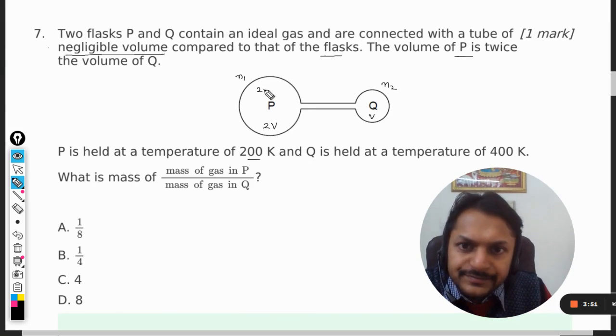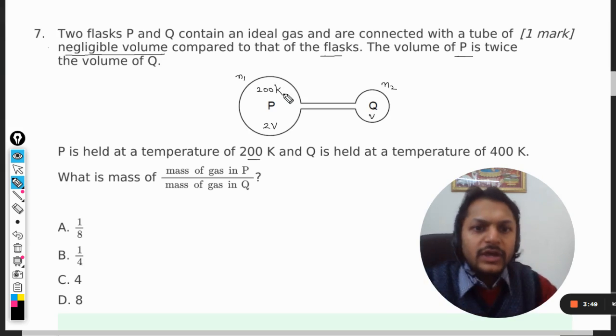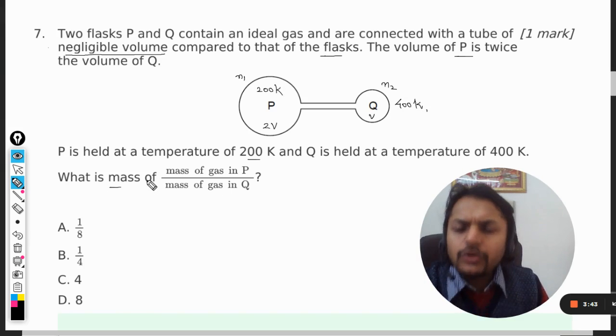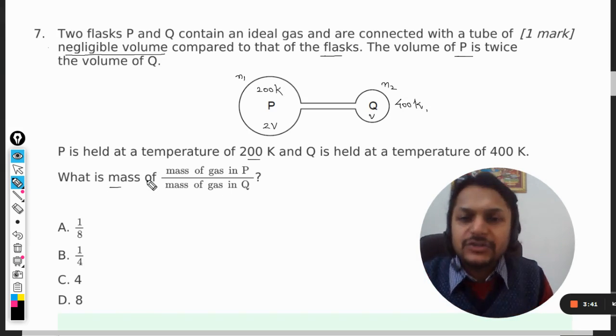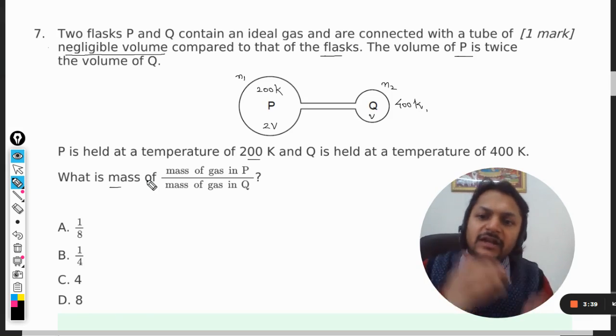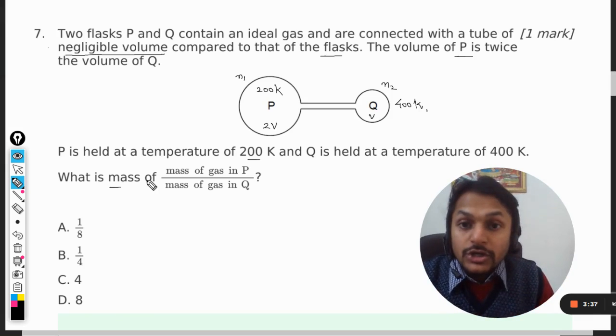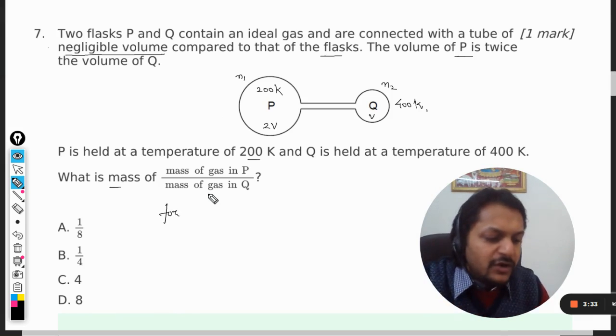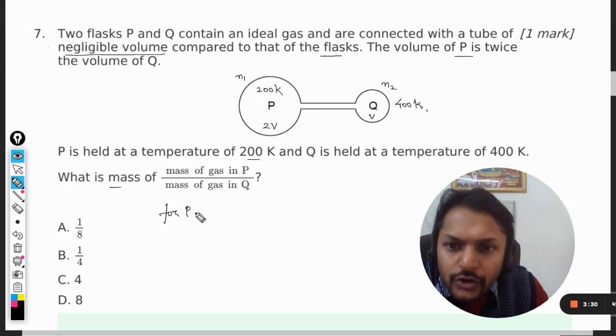Now what about temperature? P is at a temperature of 200 Kelvin and Q is maintained at a temperature of 400 Kelvin. We want to find the ratio of the mass of gas contained in P divided by mass of gas contained in Q. So first of all, let us apply the ideal gas equation.